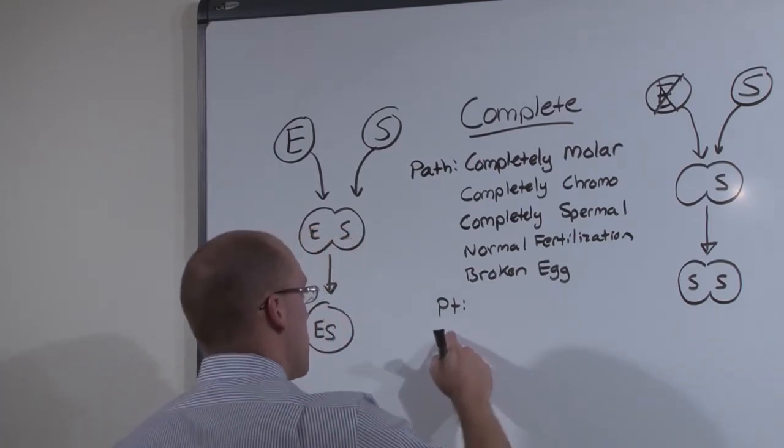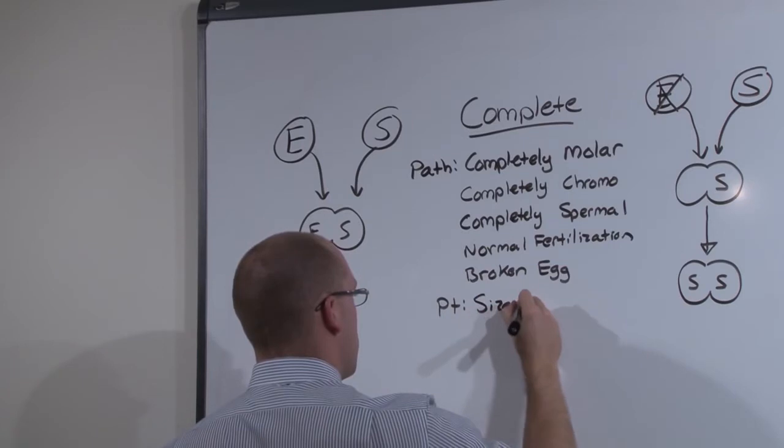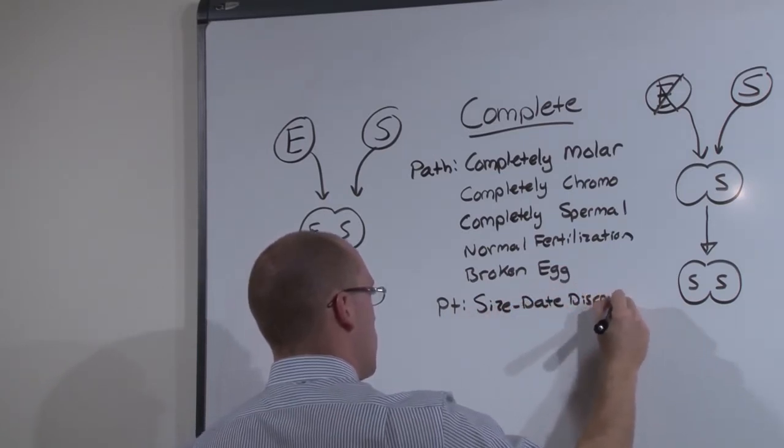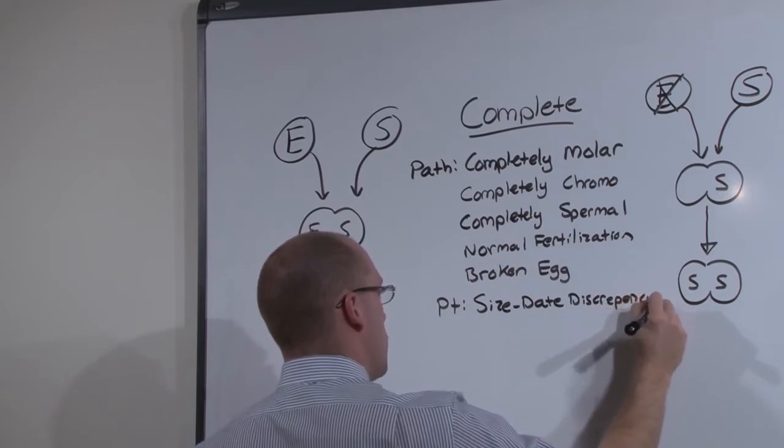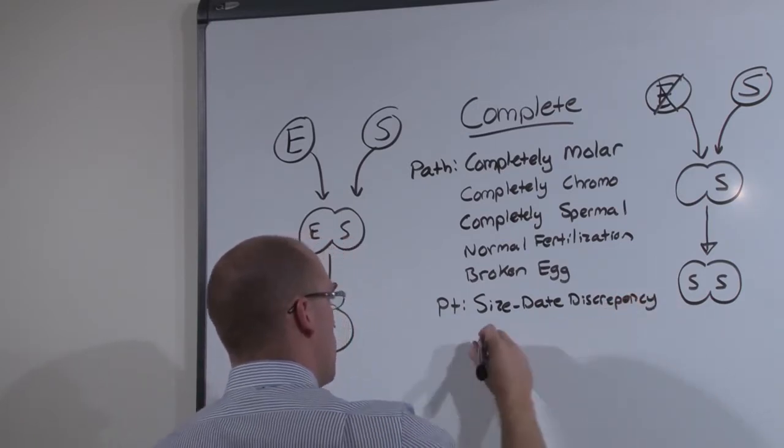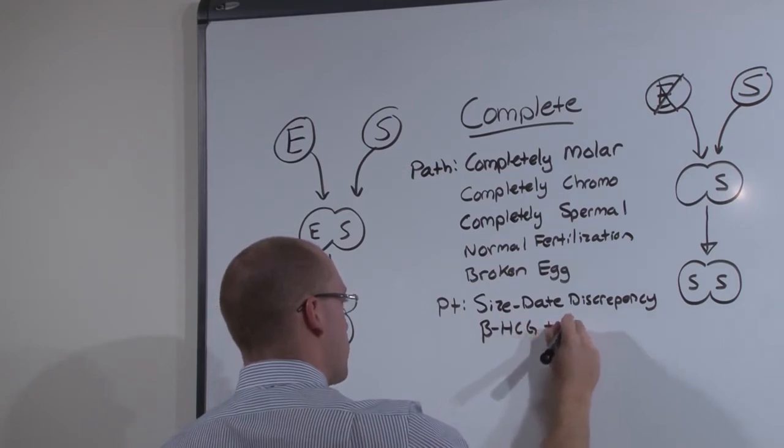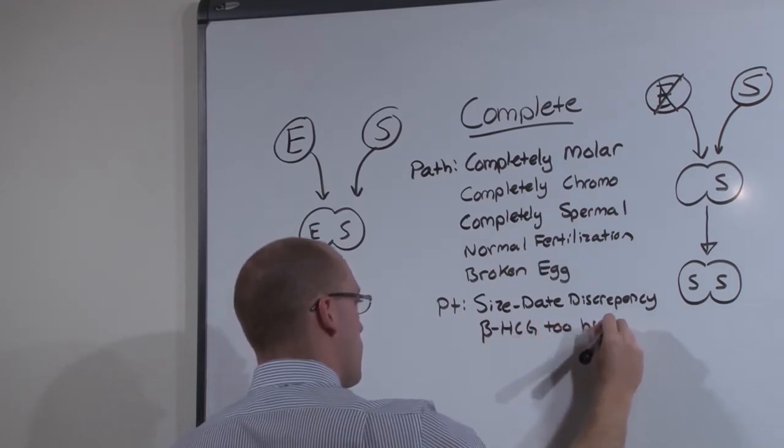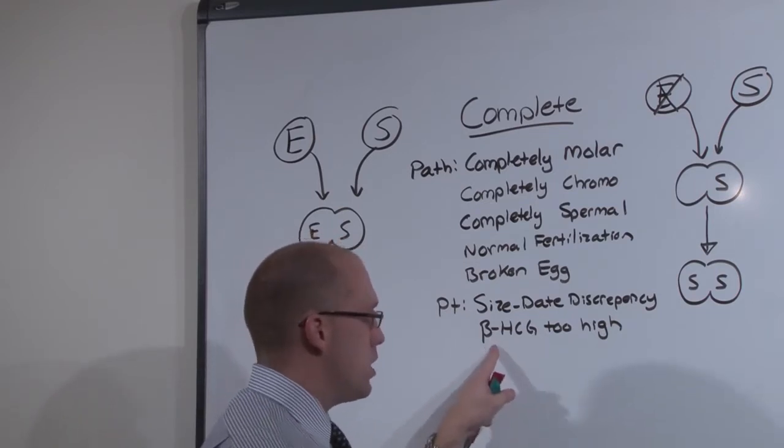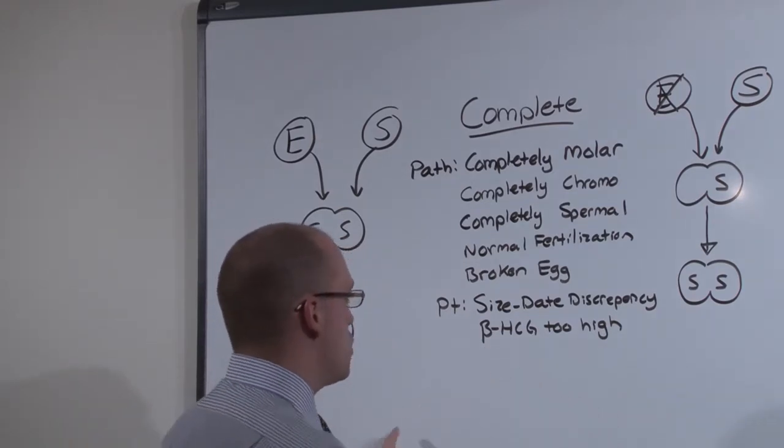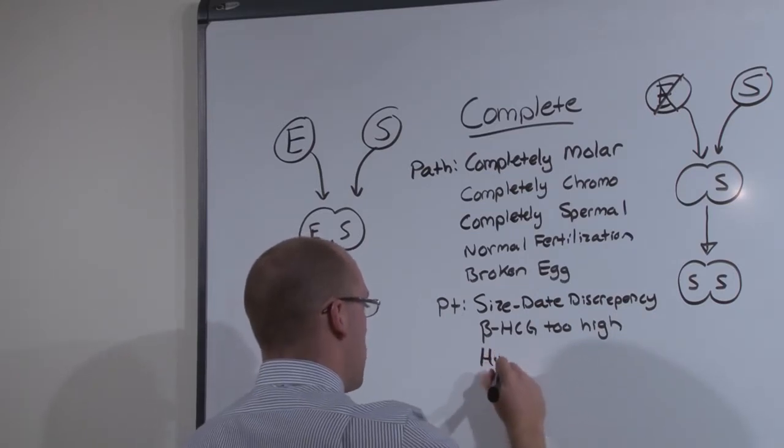So the patient can present simply with the size date discrepancy. The uterus is too big for where the pregnancy is supposed to be, or the beta-HCG is simply too high. But because beta-HCG also looks like TSH, all that beta-HCG might produce hyperthyroidism.